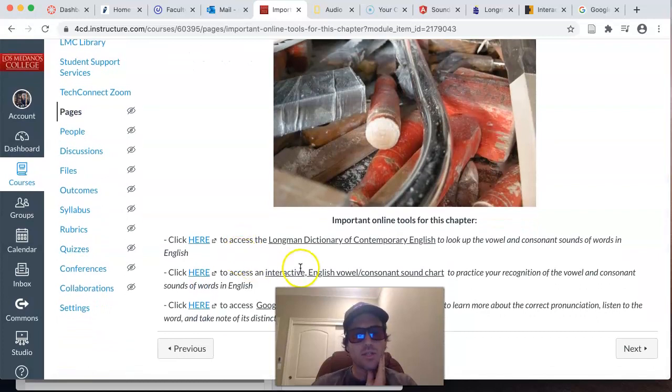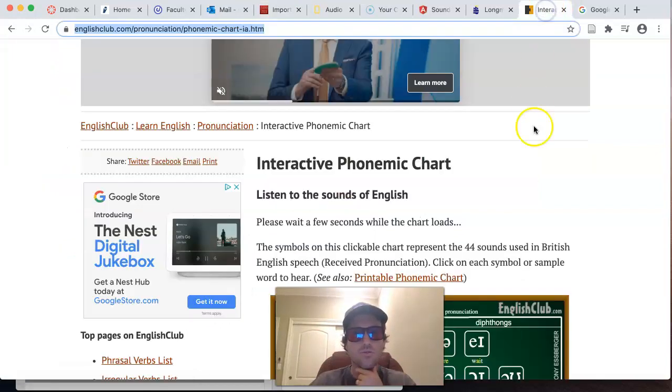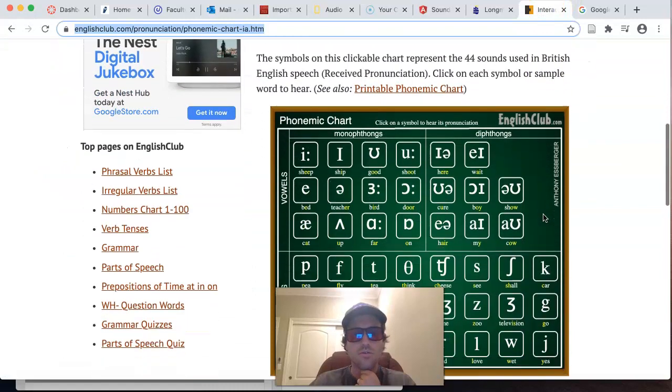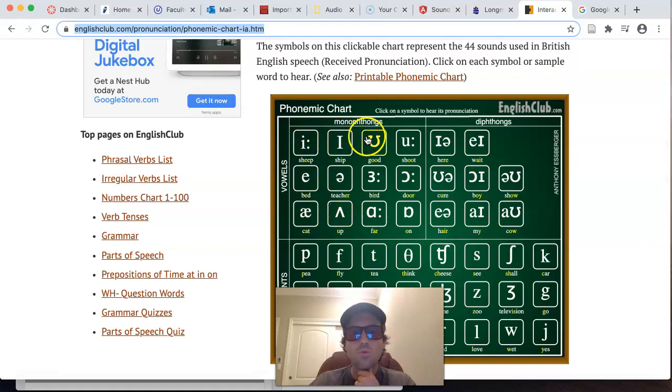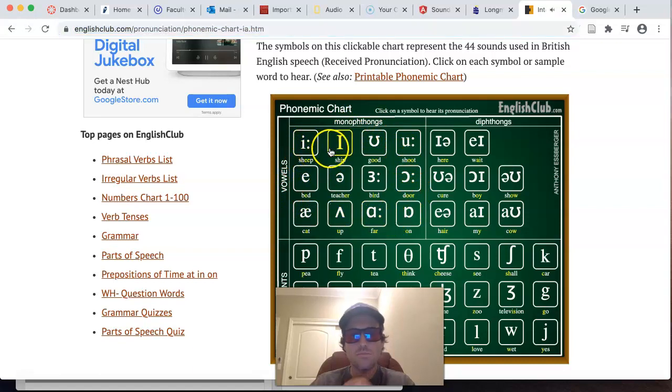What I recommend you use is this interactive English vowel consonant sound chart. So you'll have all of the sounds there and then you can play those. So click here and that takes you to this chart. These are the vowel symbols, symbols, not letters, but the symbols of all the vowel sounds in English, or the very common vowel sound in English, the schwa.